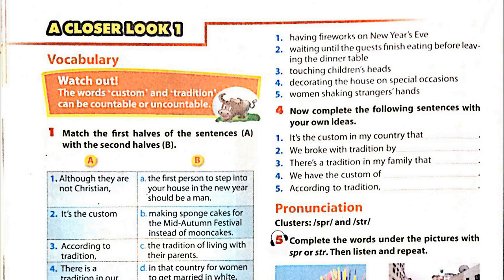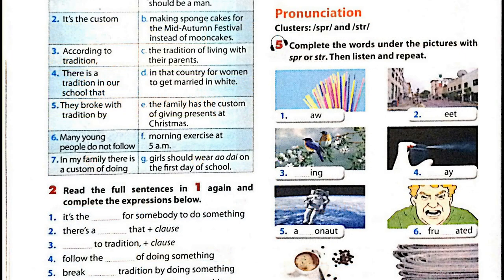Unit 4, Page 40: A Closer Look 1 — Pronunciation. Activity 5: Complete the words under the pictures with SPRU or STRU. Then, listen and repeat.